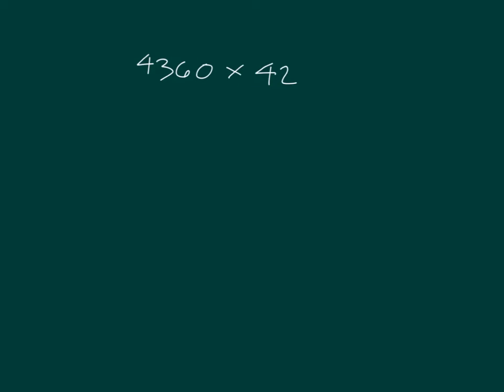4,360 times 42. What I could do is round 4,360 to what? I could round it to 4,400, but then I'd still be working with times 40. Let's round it to 4,000 because that's easier to work with.